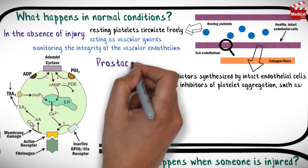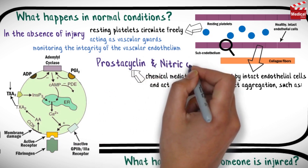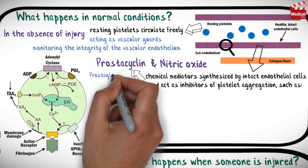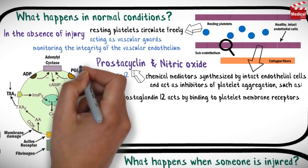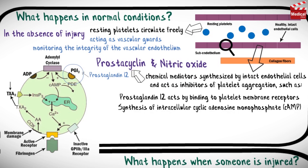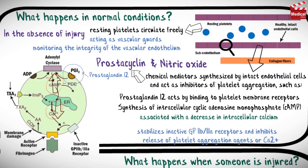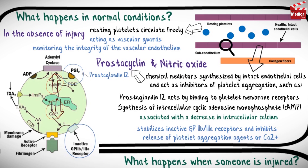There are some chemical mediators synthesized by intact endothelial cells that act as inhibitors of platelet aggregation, such as prostacyclin and nitric oxide. Prostacyclin, known as prostaglandin I2, acts by binding to platelet membrane receptors responsible for the synthesis of intracellular cyclic adenosine monophosphate (cAMP). This elevation in intracellular cAMP is associated with a decrease in intracellular calcium, which stabilizes inactive glycoprotein 2b3a receptors and inhibits release of platelet aggregation agents.